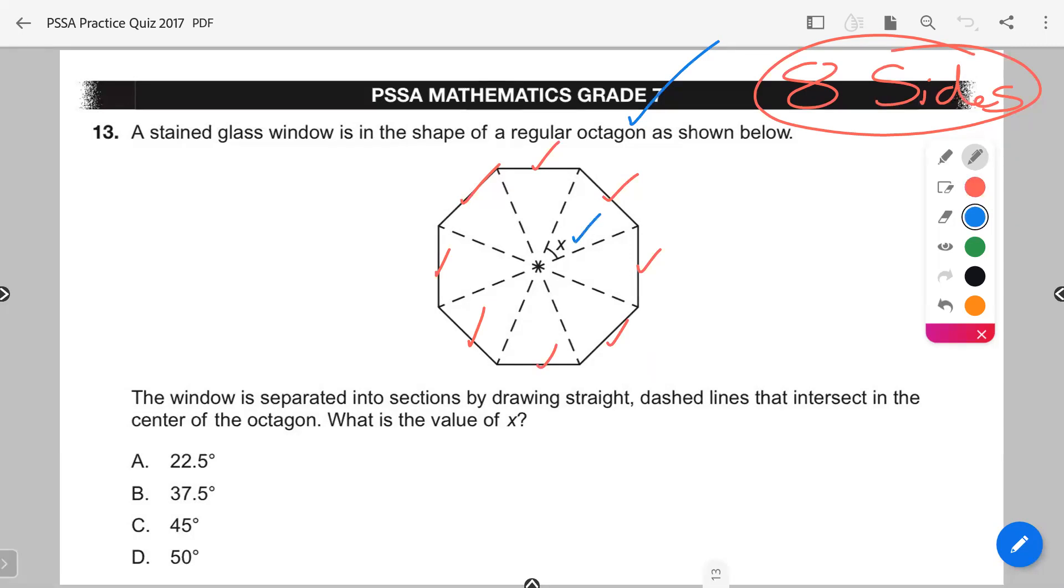Now, if you look carefully, every single one of those angle values are the same. They also tell us in the problem that this guy is a regular octagon. Now, this word right here, regular, means all the sides are the same.